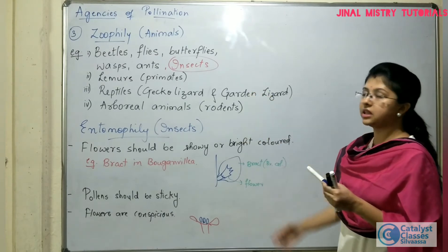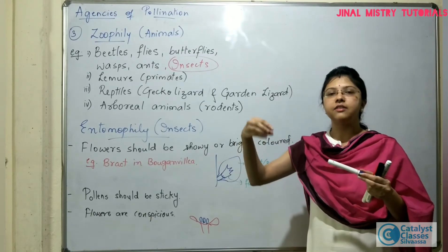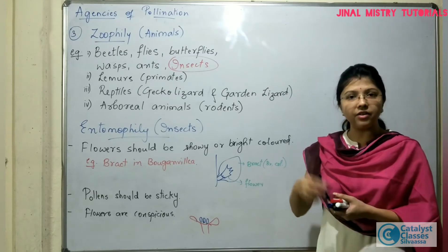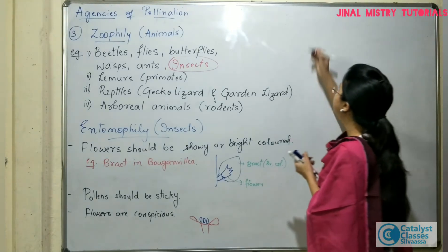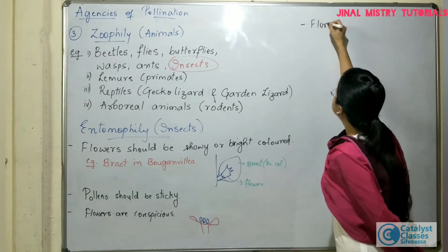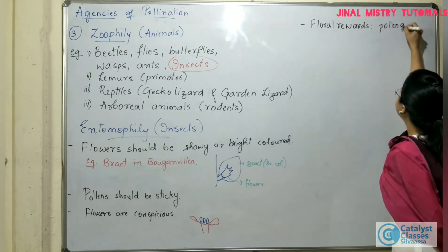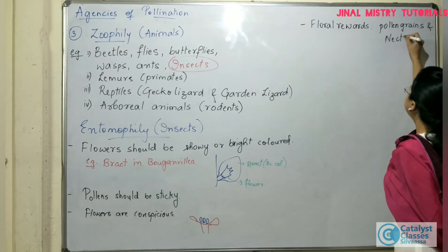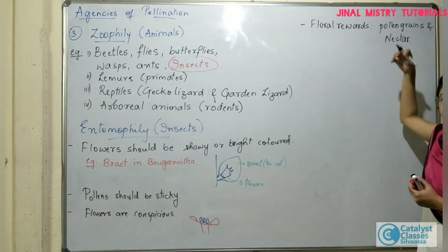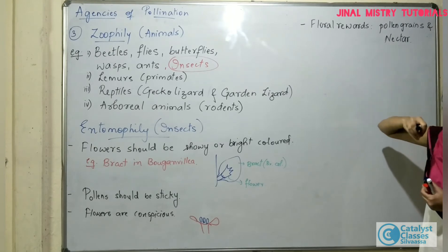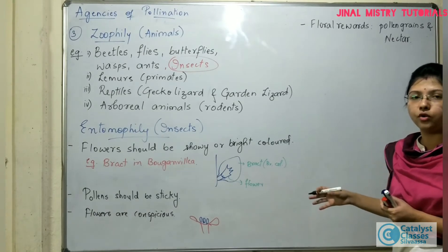Since insects or animals are the biotic agents, they will visit the flower for a certain reason. So the plant or the flower has to give certain rewards to the animal or insect so that they visit the plant quite frequently. Those will be termed as the floral rewards. The floral rewards are none other than the pollen grains and the nectar. There will be many plants which secrete nectar — they have nectar glands — so that the nectar secreted by the flower can be taken as nutritive food by the insects. And whenever they come to take the nectar, the pollen grains can be delivered onto the body of the insect.